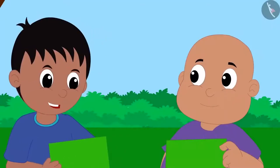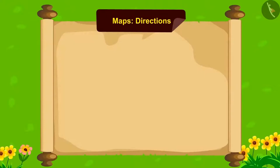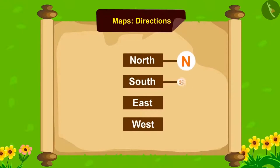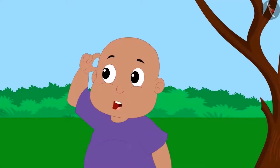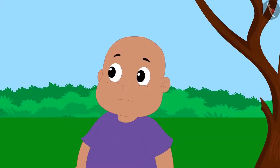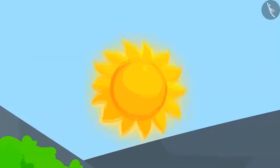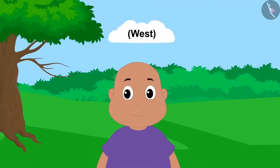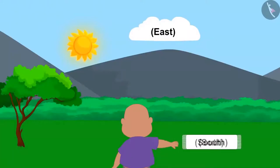Raju explained that there are four cardinal directions: north, south, east, and west. They can be written in short forms too. To recognize these directions, suppose you are looking at the direction where the sun rises — you are looking towards the east. West will be towards your back, south would be towards your right hand, and north would be towards your left hand.